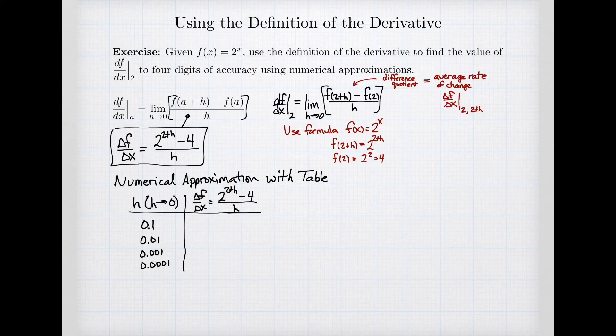For example, this first point, when h equals 0.1, the average rate of change will have a value of 2 raised to the 2+0.1, that's the 2.1 power, and I'll subtract 4, and then I'll divide it by 0.1. And if I get my calculator, 2 raised to the power 2.1 minus 4, and divide it by 0.1, I get a decimal value, so this is part of why it's an approximation, 2.870939 rounded at that last step.